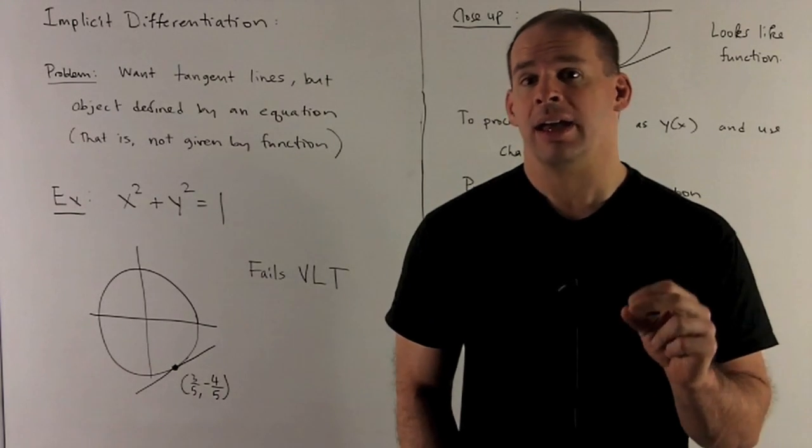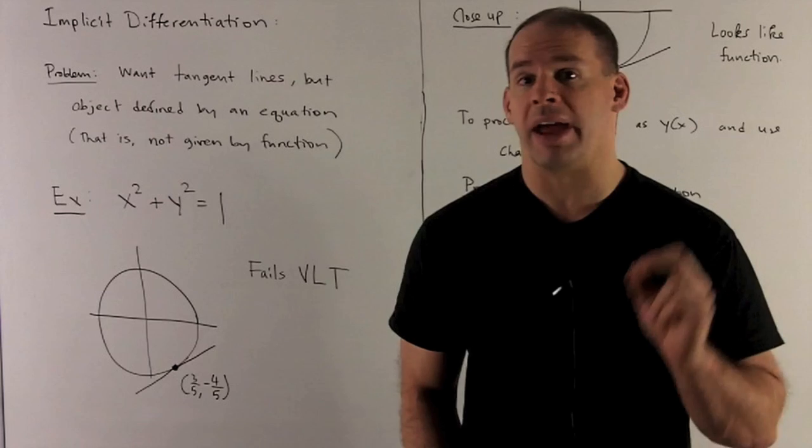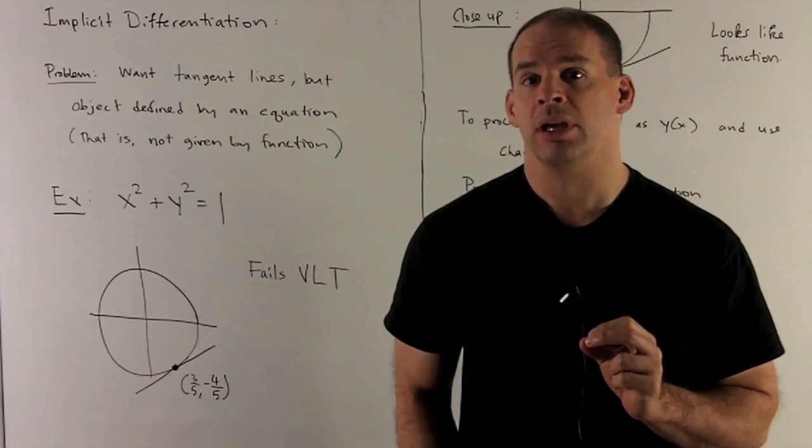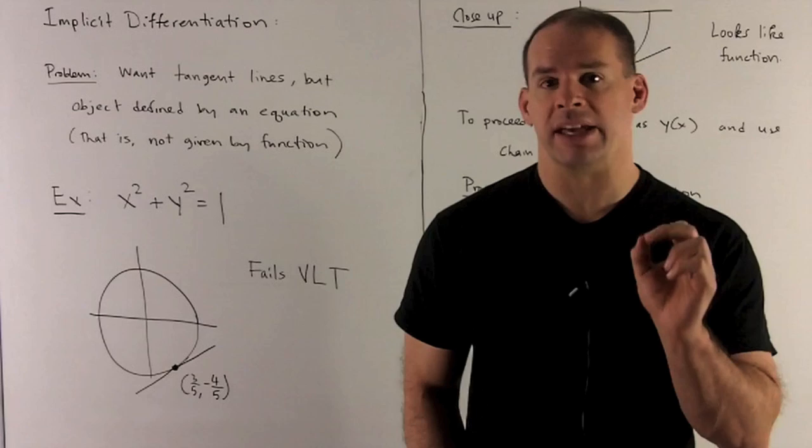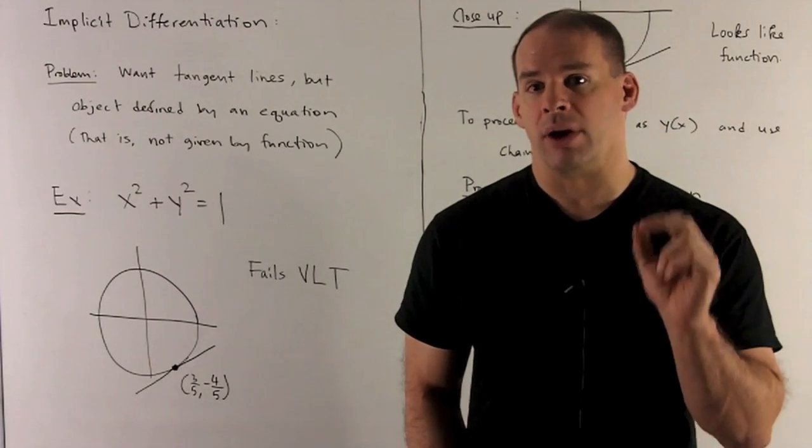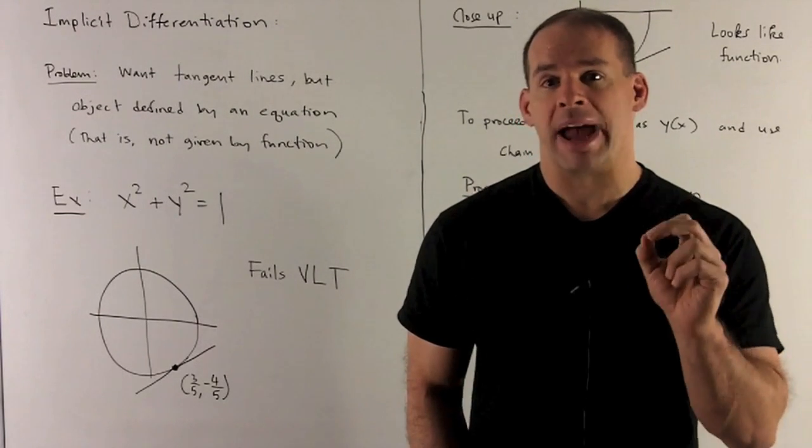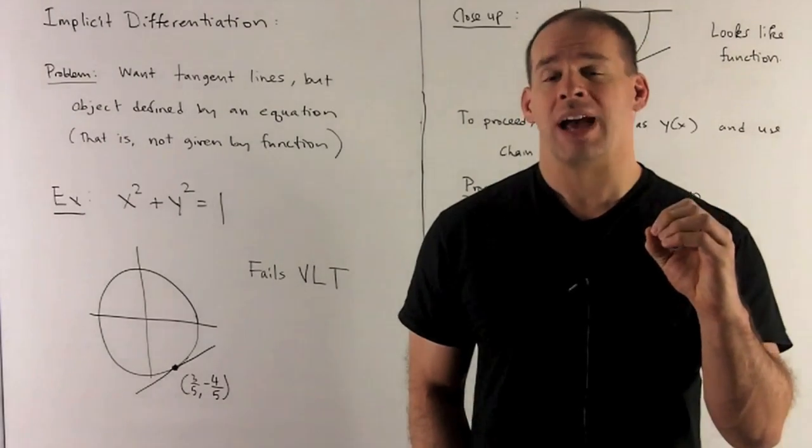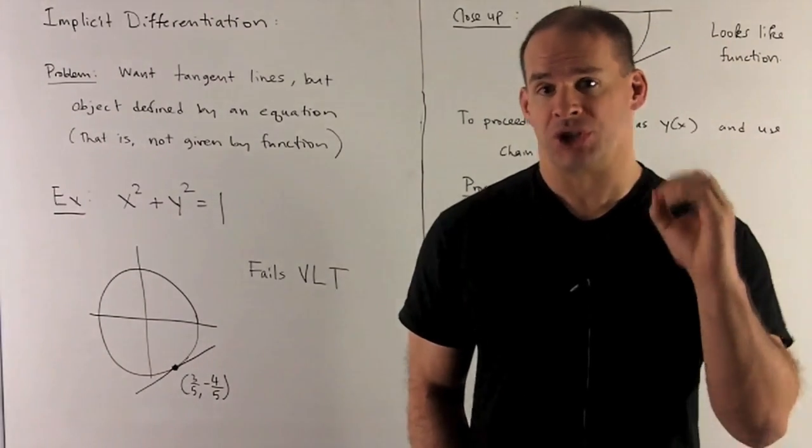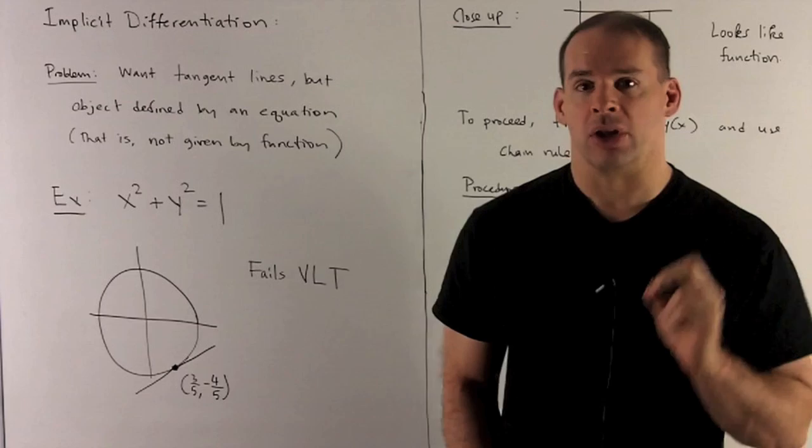So we want to have a procedure that lets us get a handle on how we get the tangent line, and the problem is going to be how do you get the slope. That's where implicit differentiation comes into play. The idea is even though I don't have a function, if I put my graph under the microscope and it looks like a function, I can use the chain rule to get results.